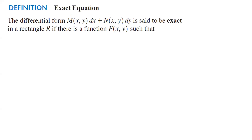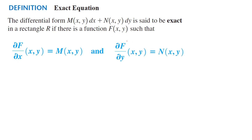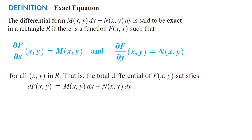Definition of exact equation: The differential form M(x,y) dx + N(x,y) dy is said to be exact in a rectangle R if there is a function f such that the partial derivative of f with respect to x equals M and the partial derivative of f with respect to y equals N, for every point (x,y) in rectangle R. That is, the total differential of f satisfies df = M dx + N dy.